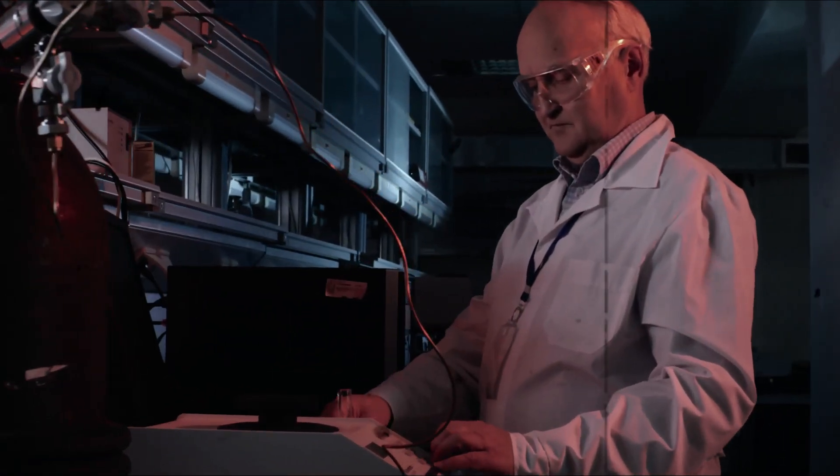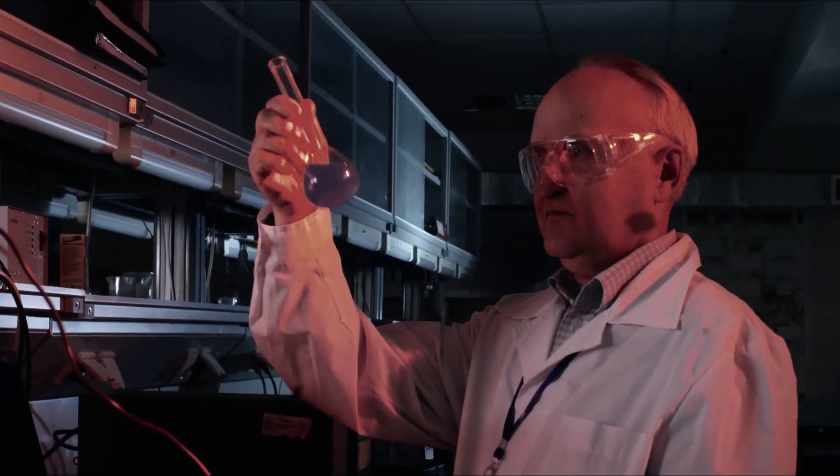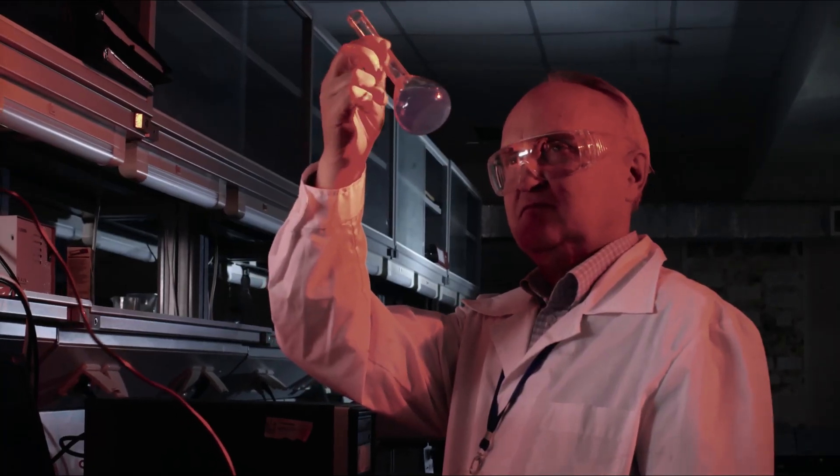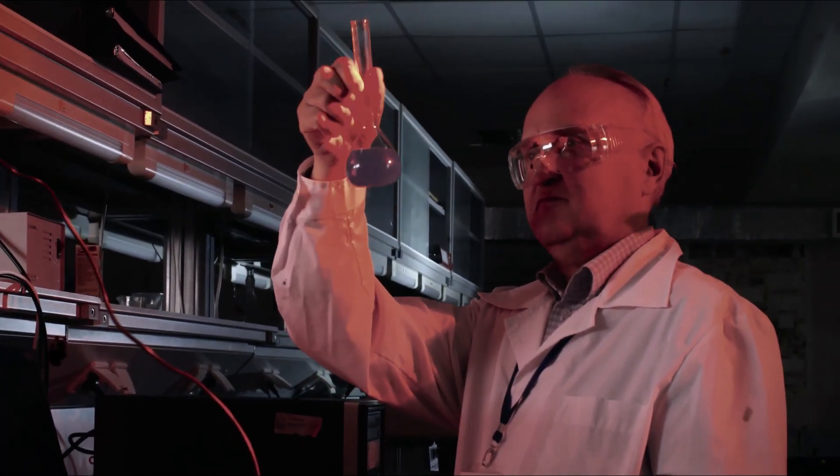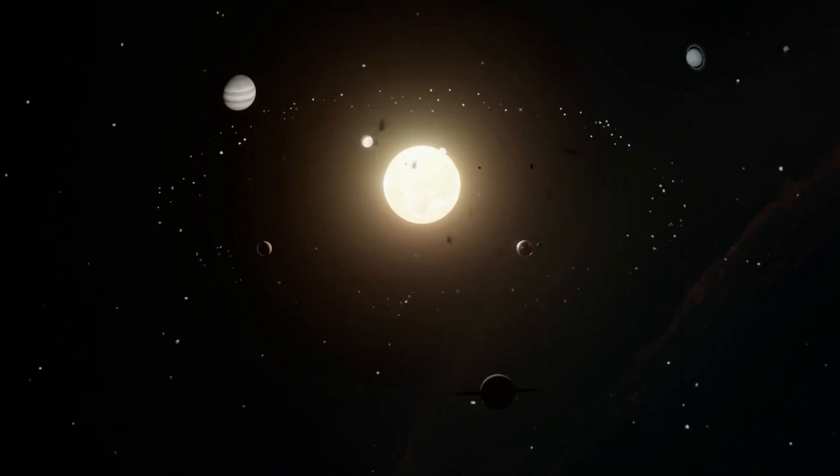That very night, Rubin's sensors detected something unprecedented. A pale emerald luminescence emerged from the direction of Sagittarius, tracing a path that matched no known asteroid or comet trajectory. It moved with a velocity impossible for any object native to our solar system.